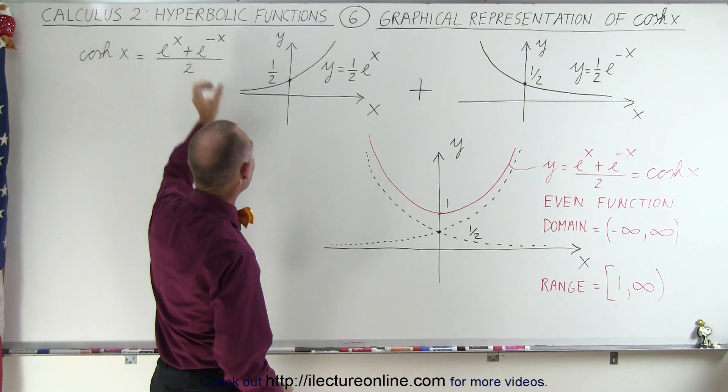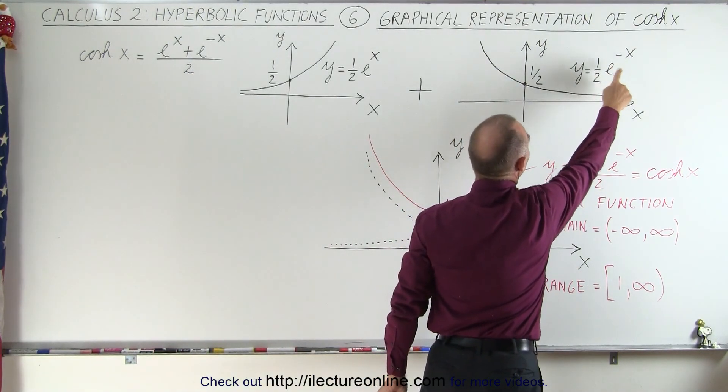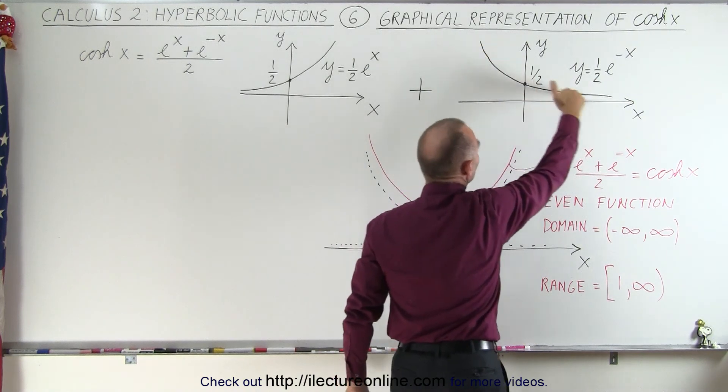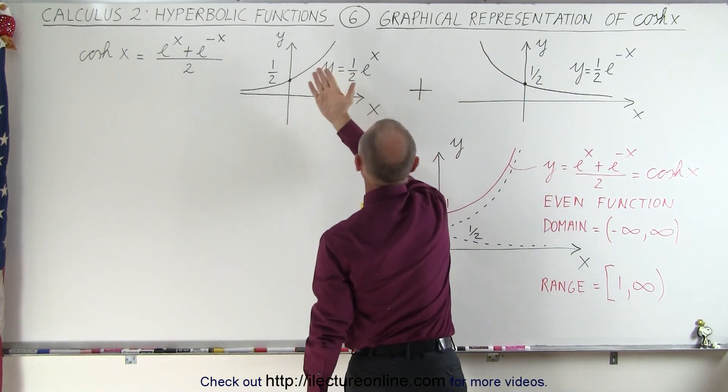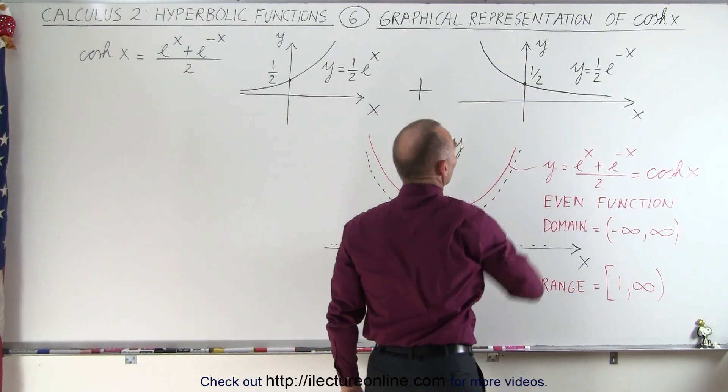If we then graph the second half of that, we have y equals 1 half times e to the minus x, so we get a function that looks like this. It's basically this function flipped over, crossing to the point y equals 1 half.